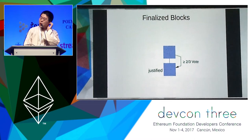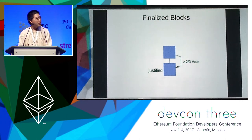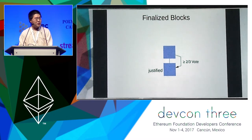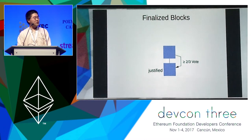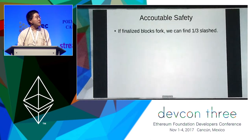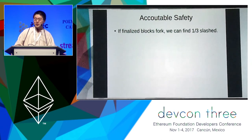There's a stronger condition called finalized. Only a justified block can be finalized. When there's a vote involving two blocks that are a direct parent and a direct child, the cited justified block becomes finalized. In this picture, the block at the bottom gets finalized. With these rules, I have been laying out definitions for stating a theorem.